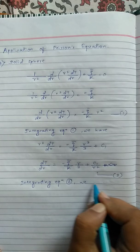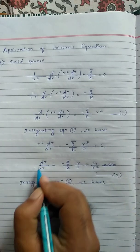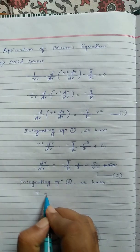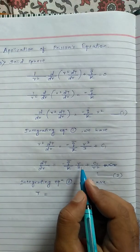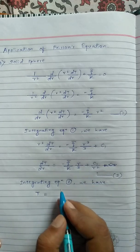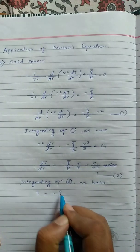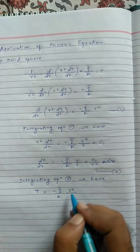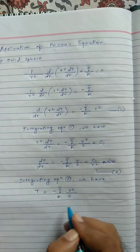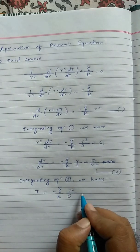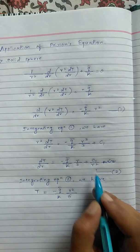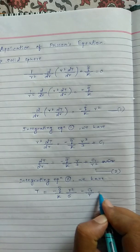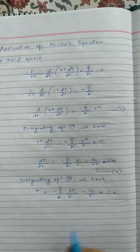Integrating equation 2, the temperature profile becomes: T = -q̄/k · (r²/6) - C₁/r + C₂, where C₂ is the constant added after the second integration.